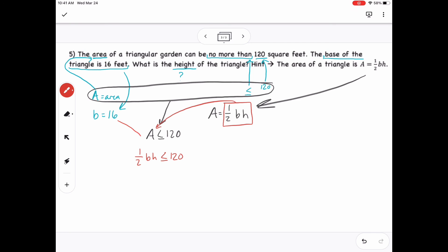So then now I can kind of simplify and solve for H. So one-half of 16 is 8. And then I'll need to divide both sides by 8 to get H by itself, which leaves me with H less than or equal to 15. So what this means is, in words, is that the height for this triangular garden is going to be 15 feet or less. Okay, show's over.